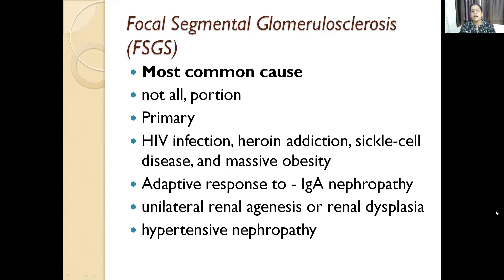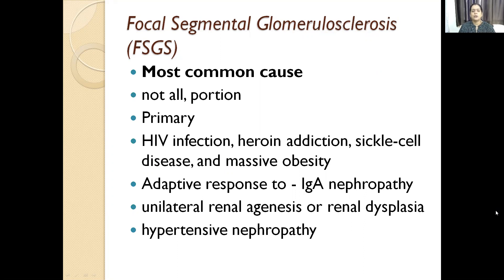FSGS can occur as an adaptive response to some injury happening because of something else — like IgA nephropathy, unilateral renal agenesis, renal dysplasia, and hypertensive nephropathy — wherein there is reduction in the renal cell mass.